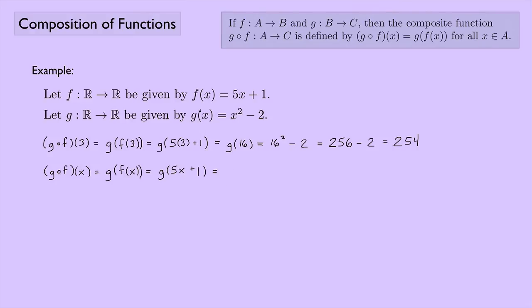And now g of 5x plus 1. So g of x is x squared minus 2. So g of 5x plus 1 is going to be the quantity 5x plus 1 squared minus 2. Just taking whatever's in here and replacing it with the x that's in the formula. And now I can multiply this out. So this is going to be 25x squared.